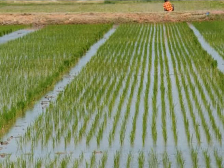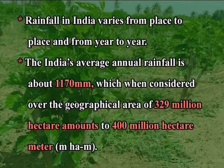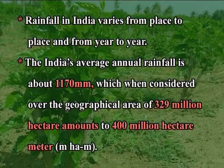The basic source of water is precipitation in the form of rainfall or snowfall. Rainfall in India varies from place to place and from year to year. India's average rainfall is about 1170 millimetres, which when considered over the geographical area of 329 million hectares amounts to 400 million hectare metres.